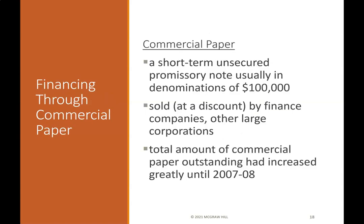Financing through commercial paper: Commercial paper is a short-term, unsecured promissory note usually in denominations of $100,000, sold at a discount by finance companies and other large corporations. The total amount of commercial paper outstanding had increased greatly until 2007 and 2008.